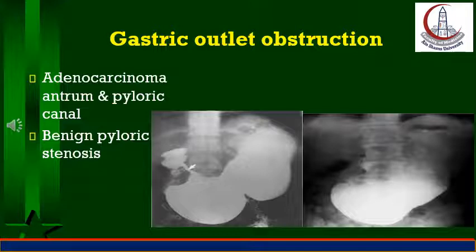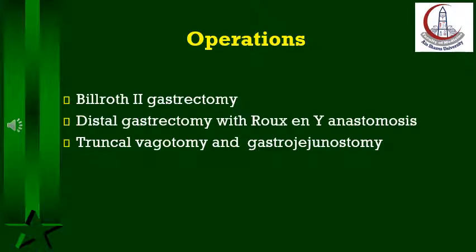Blood gases and electrolytes should be surveyed and imbalances corrected. ECG is done to check for changes due to hypokalemia. Surgery is indicated in all cases. Preoperative preparation includes correction of dehydration and electrolyte deficiencies by normal saline 0.9% and glucose 5%, usually in a ratio of 1:1, with potassium chloride according to the deficit. Parenteral nutrition is started if indicated. Nasogastric suction is needed for several days with stomach wash using normal saline to decompress and clean the stomach. The stomach is usually hugely dilated and hypoperistaltic.